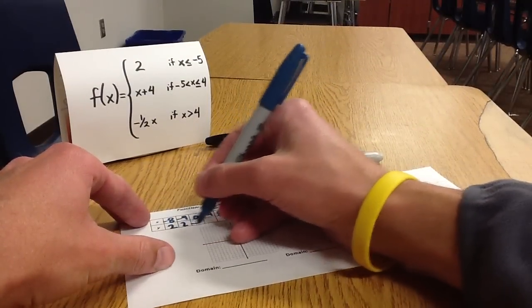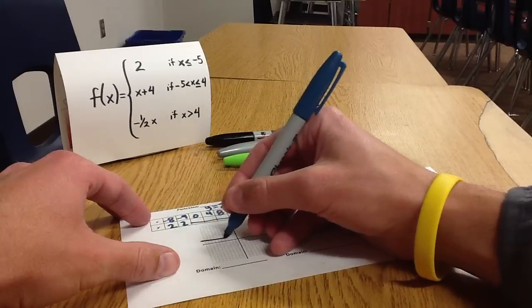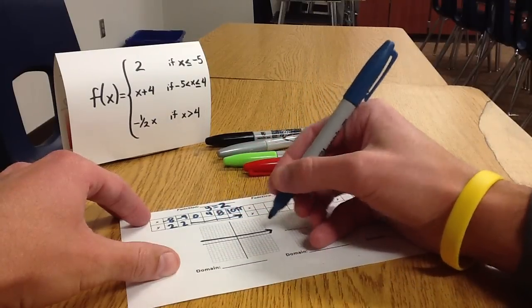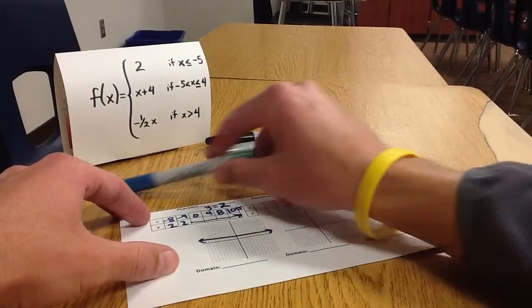So 2, 2, 2, 2, all over the place. So it gives us our horizontal line for that portion.